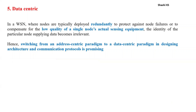The next mechanism is data-centric operation. In a wireless sensor network, nodes are deployed redundantly to protect against node failures and compensate for the low quality of a single node's sensing equipment. As a result, the identity of a particular node becomes irrelevant — we are not concerned about where the data arrives from, only the quality of the data. This requires a shift from an address-centric paradigm to a data-centric paradigm in protocol and architecture design.